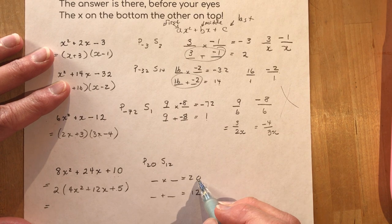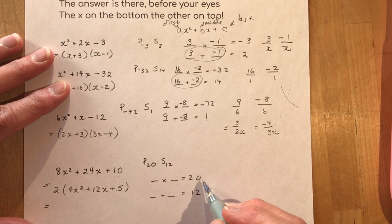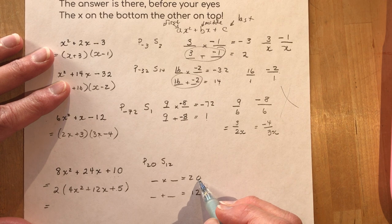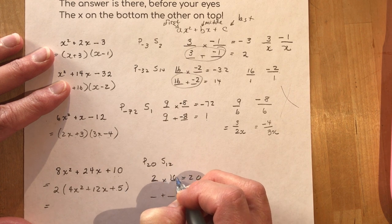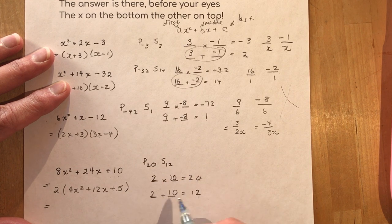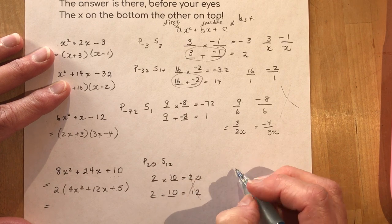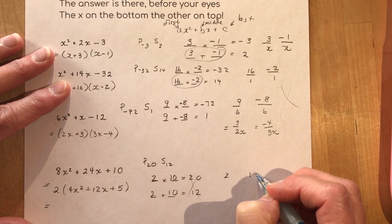Now the product is positive so they both have to be positive. What makes 20? Well how about 2 times 10 and 2 plus 10 is 12. Okay so I put 2 and 10, 2 and 10. These are my magic numbers. Forget about these things now. You've got 2 and you've got 10.